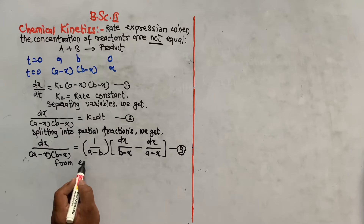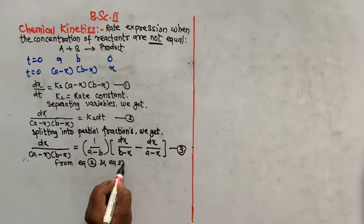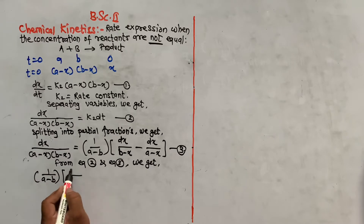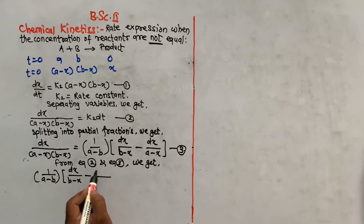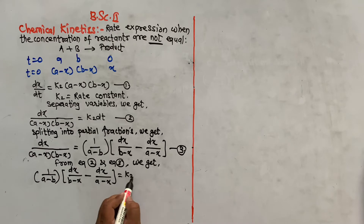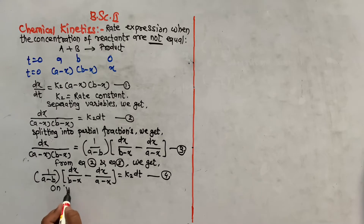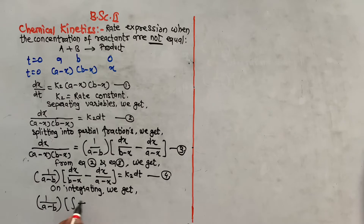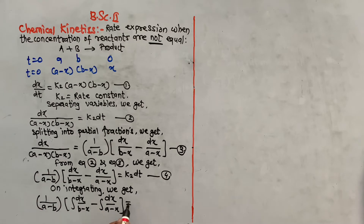From equations 2 and 3, we get: 1/(a - b) × [dx/(b - x) − dx/(a - x)] = K₂ dt, which is equation number 4. On integrating, since 1/(a - b) is a constant, we get: 1/(a - b) × [∫dx/(b - x) − ∫dx/(a - x)] = K₂∫dt.